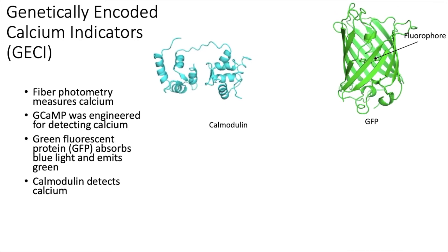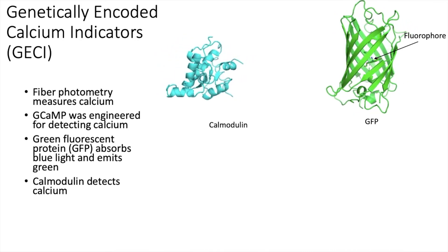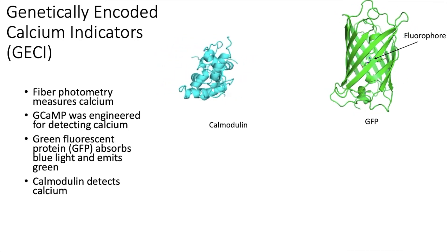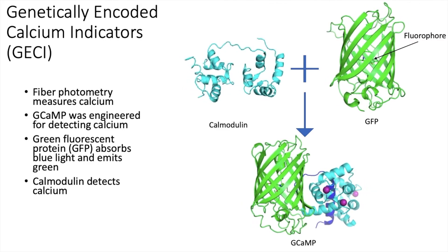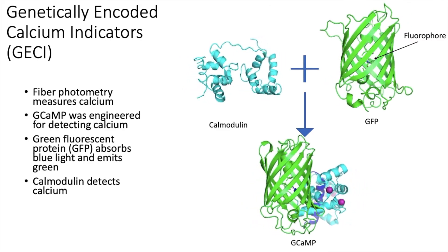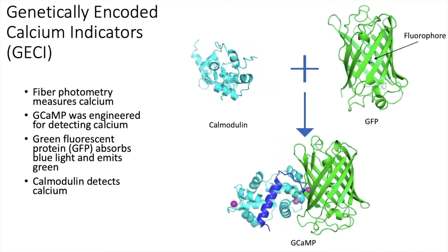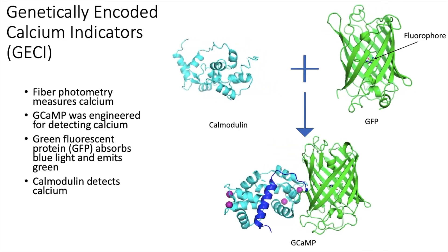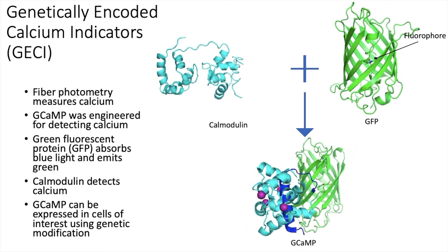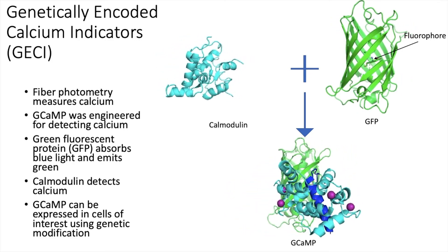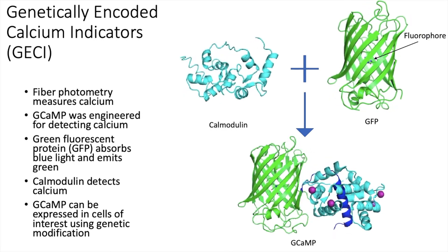The second protein is calmodulin, which is a protein found in all cells and plays an important role in detecting calcium and triggering signaling cascades. By combining these two proteins, scientists now have a tool that, if bound to calcium, will emit green light in the presence of blue light. The gene that encodes these two proteins can then be expressed in whatever cell you are interested in using various genetic modification techniques.